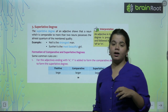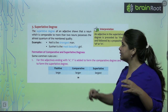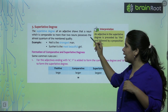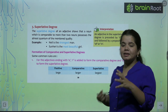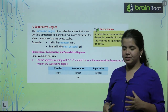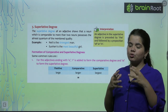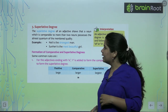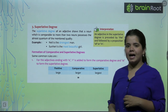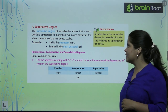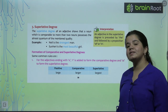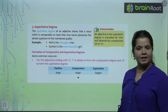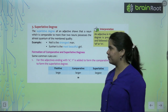Third, we have superlative degree, which we use for the best among nouns. An adjective shows superlative degree when a noun is compared to more than two nouns. When we compare more than two people or things, superlative degree is used. Like 'Neil is the strongest man,' 'She is the most beautiful girl,' 'She is the most intelligent girl in the class.'